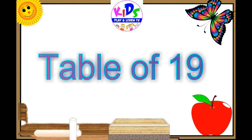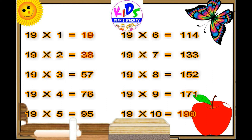Hello, let's learn the table of nineteen. Nineteen ones are nineteen, nineteen ones are nineteen. Nineteen twos are thirty-eight, nineteen twos are thirty-eight. Nineteen threes are fifty-seven, nineteen threes are fifty-seven. Nineteen fours are seventy-six, nineteen fours are seventy-six. Nineteen fives are ninety-five, nineteen fives are ninety-five.